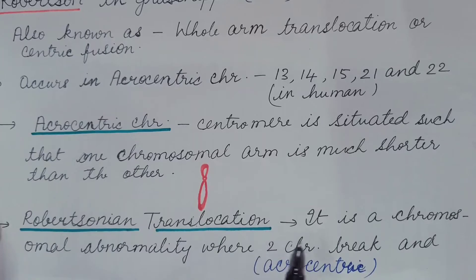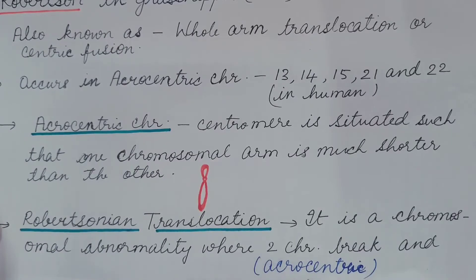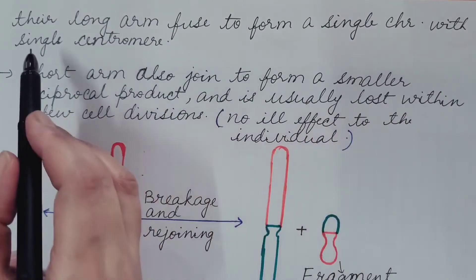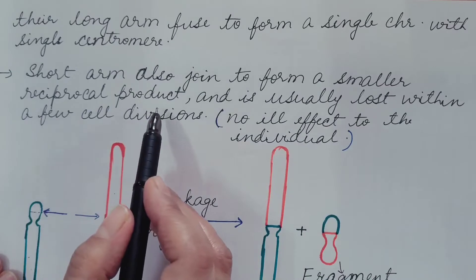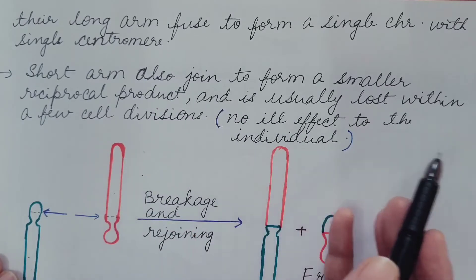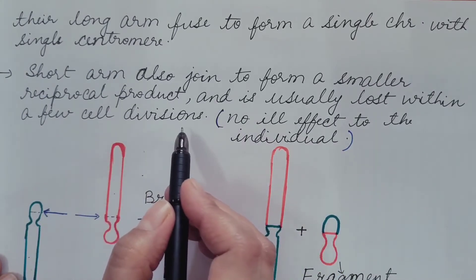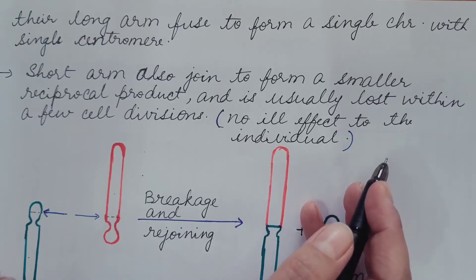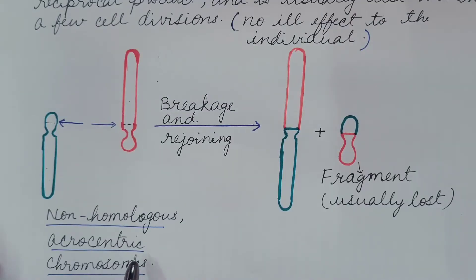Robertsonian translocation is a chromosomal abnormality where two acrocentric chromosomes break, and their long arms fuse to form a single chromosome with a single centromere. The short arms also join to form a smaller reciprocal product, which is usually lost within a few cell divisions. However, this loss does not have any ill effect on the individual because these short arms consist of non-essential genes which are also present elsewhere in the genome.